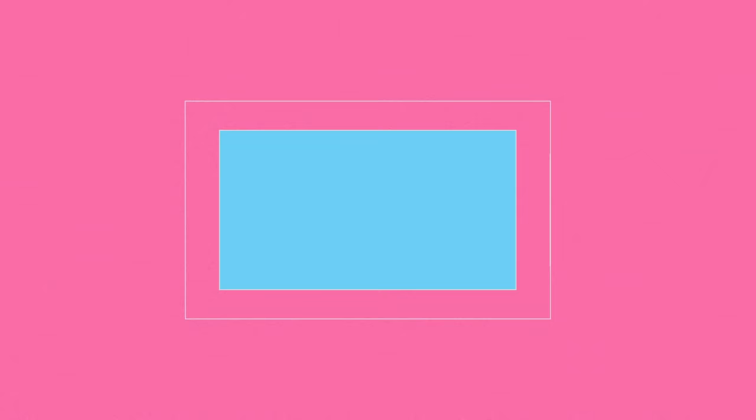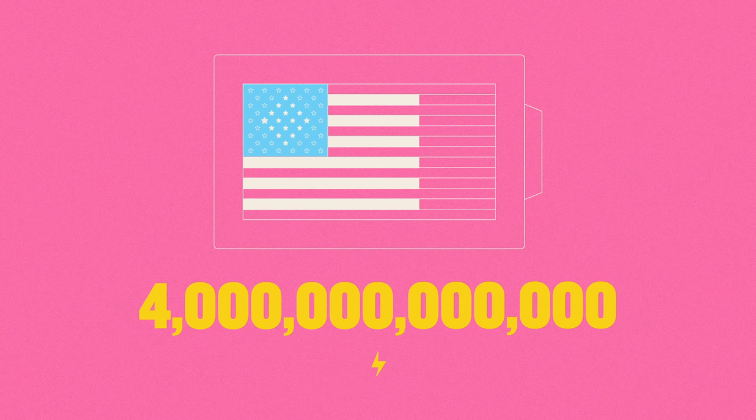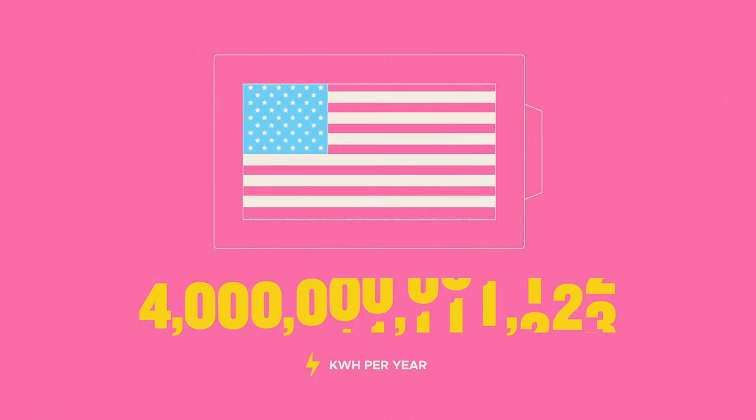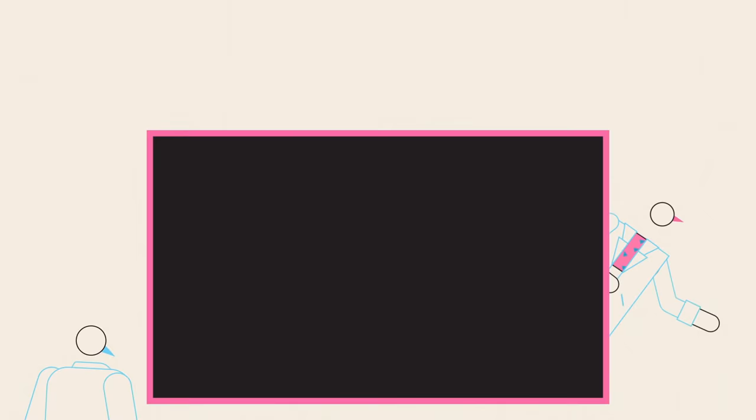However, if we scale things up to the level of a national grid, things really start to fall apart. In one year, the US consumes almost 4,000 billion kilowatt hours, which means that at 2020 prices, the cost of powering the US for one day on batteries alone will be almost 1.5 trillion dollars, or just over a third of the 2020 US federal budget.